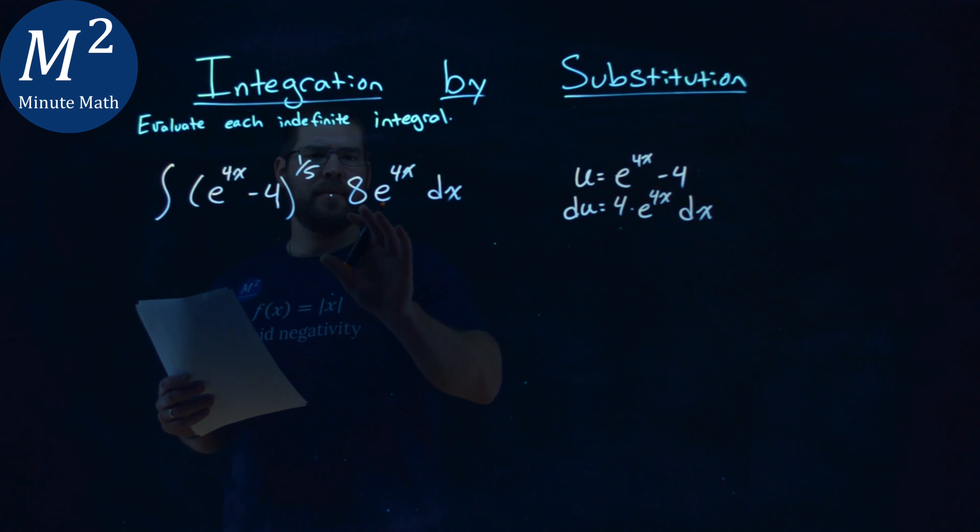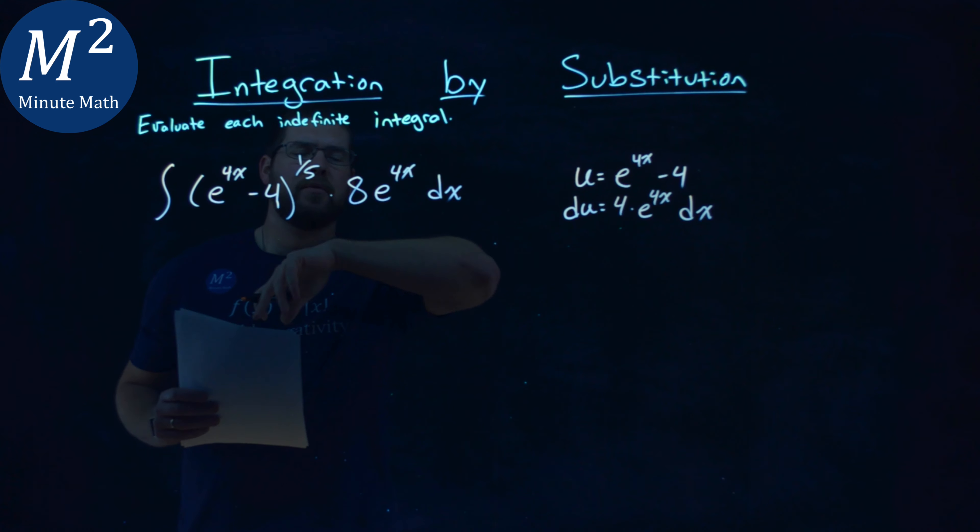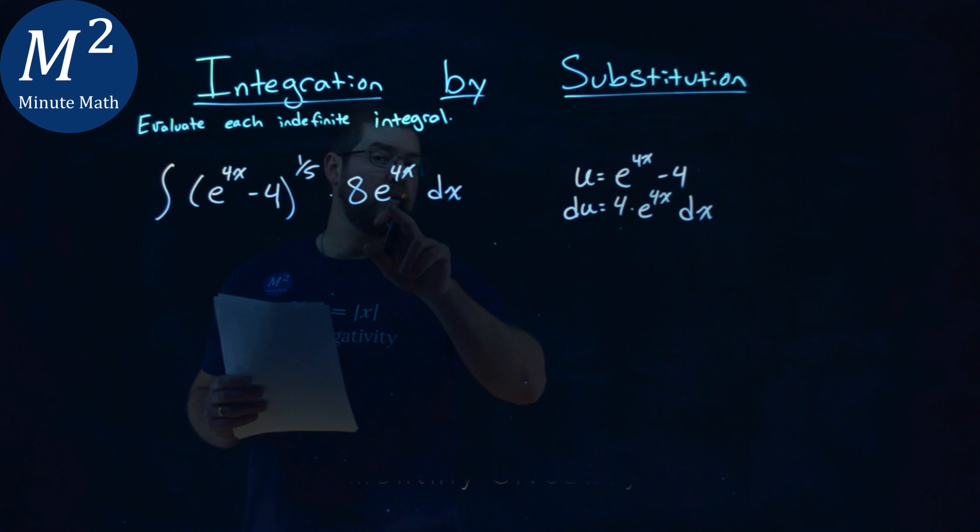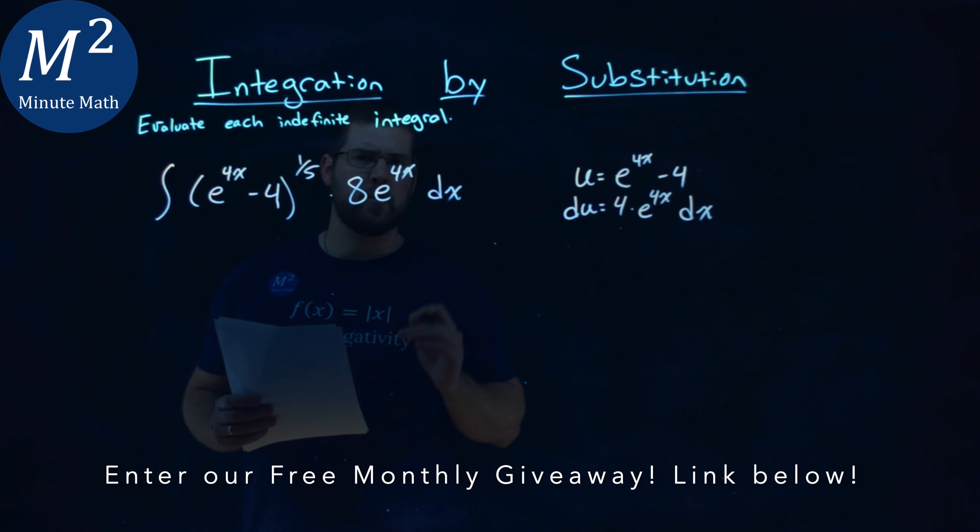Now notice here, I want to see if I can make this in terms of u and du. The u is right here inside the parenthesis, and my du is actually very close to what we have. We have e to the 4x here, but I have an 8, and I want a 4.